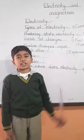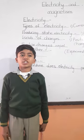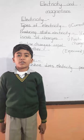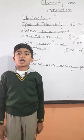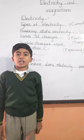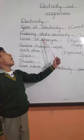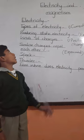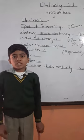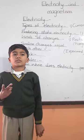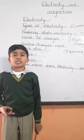The electricity which gathers on some objects is called static electricity. I will tell you about kinds of charges. There are two kinds of charges: negative charge and positive charge.